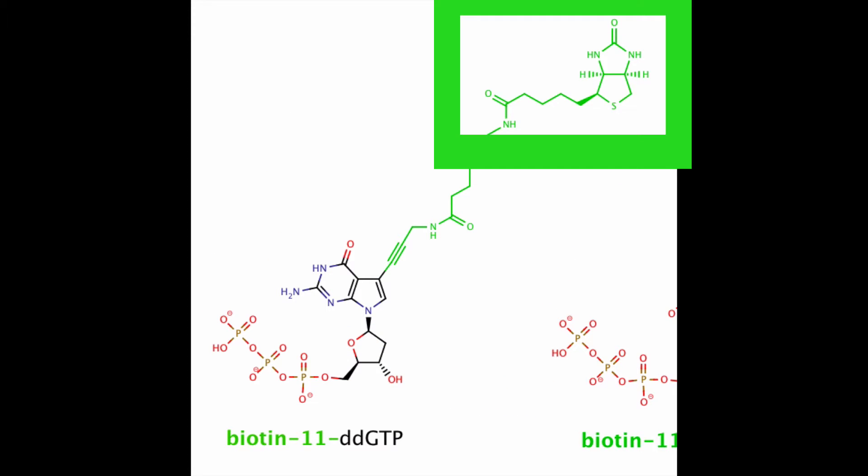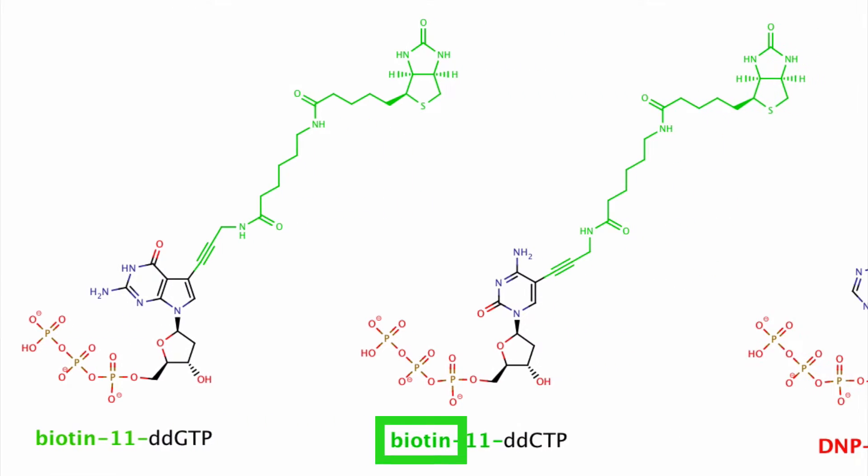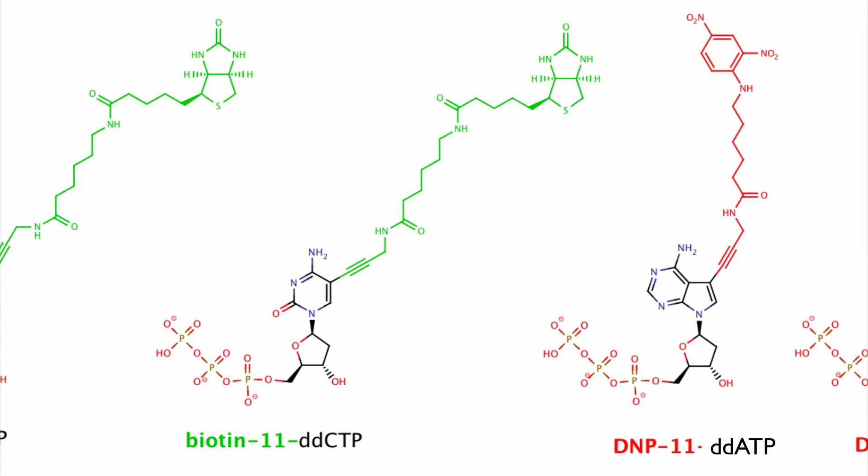For example, biotin is going to give a green color after staining, and that's going to carry on the G and the C. DNP is going to give a red color after staining, and that's carried on the A and the T.